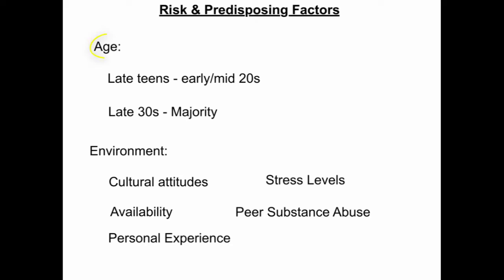Age-related risk factors include late teens to early to mid-20s and late 30s, where the majority of alcohol-related disorders develop. Environmental risk factors include cultural attitudes towards drinking and intoxication, availability of alcohol, acquired personal experiences with alcohol, stress levels, and heavier peer substance use.